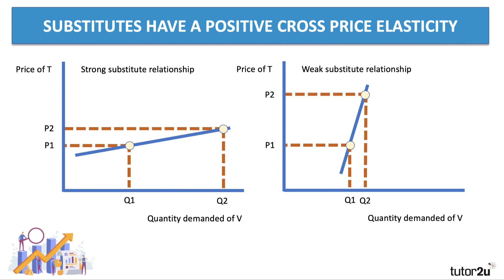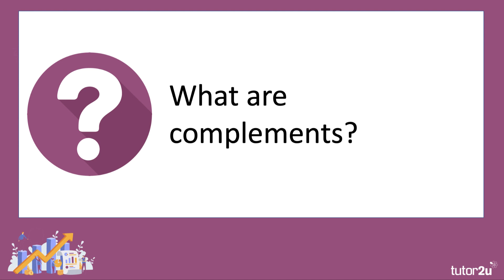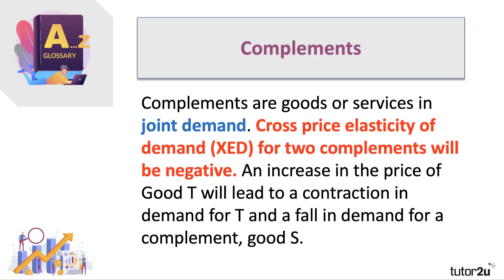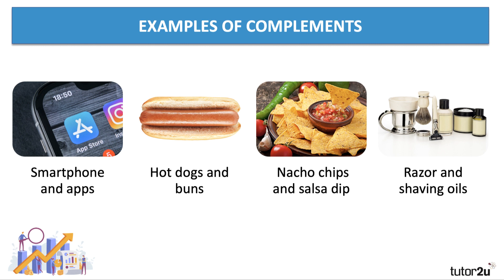Complements are goods and services in joint demand — we tend to buy them together. The cross price elasticity of demand for two complements will always be negative; the sign does matter. An increase in the price of tea, for example, leads to a contraction in demand for tea and a fall in demand for a complementary product. Examples include smartphones and apps, hot dogs and buns, nacho chips and salsa dip, and razors and shaving products.